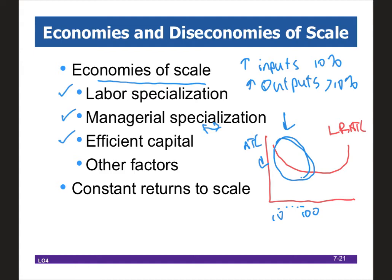There are a variety of other factors that can lead to economies of scale. Largely, we're talking about economies of scale as lower ATC over greater and greater quantities. But the reason the long-run ATC curve is declining is not because of the issue of declining marginal returns — this has to do with economies of scale.